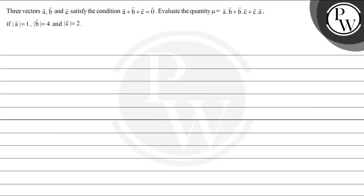Hello. So let's read this question: three vectors a, b, and c satisfy the condition a + b + c = 0, and we have to evaluate the quantity μ = a·b + b·c + c·a, given that |a| = 1, |b| = 4, and |c| = 2.